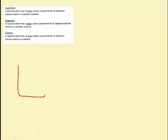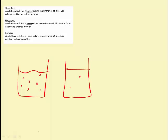We need to talk about a few terms. A solution which has a higher solute concentration than another one is considered to be hypertonic. So in this case, solution A is hypertonic to solution B. Solution B is hypotonic to solution A because a hypotonic solution has a lower solute concentration relative to another solution. You can't use these terms on their own — you can't just say solution A is hypertonic or solution B is hypotonic without specifying compared to what.